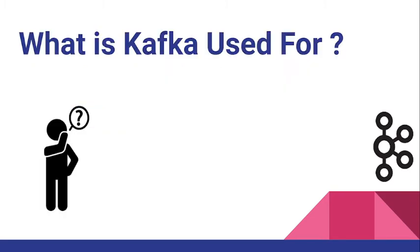What is Kafka used for? Kafka is primarily used to build real-time streaming data pipelines and applications that adapt to the data streams. It combines messaging, storage, and stream processing to allow storage and analysis of both historical and real-time data.